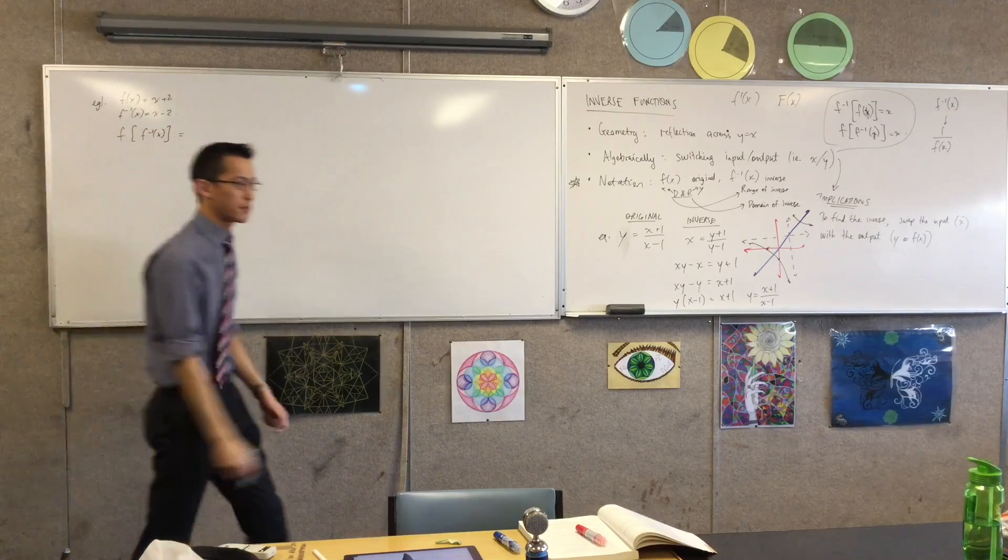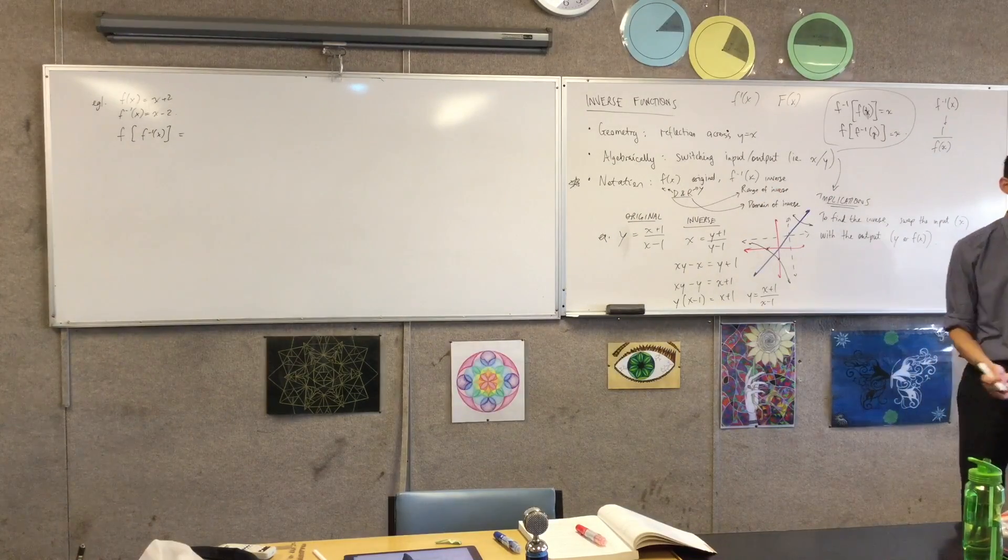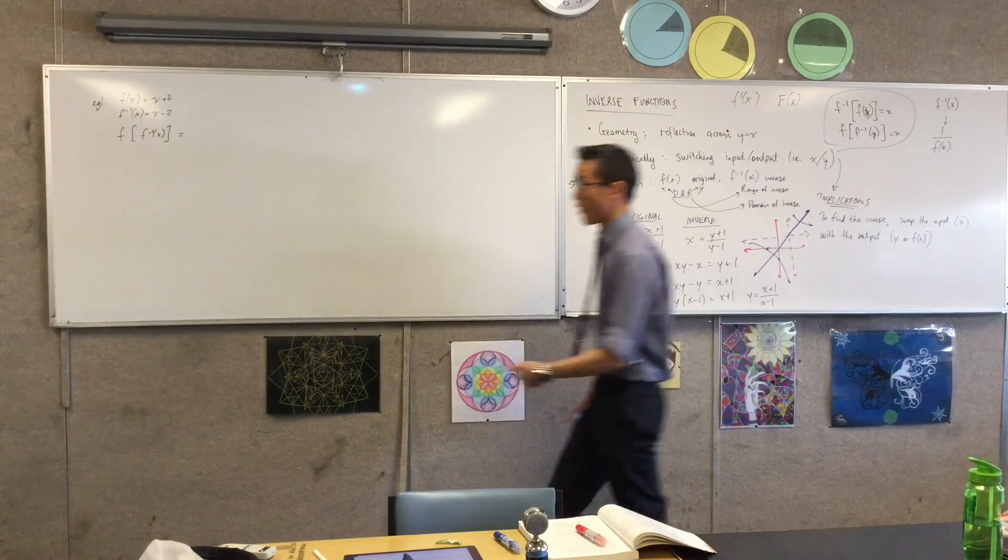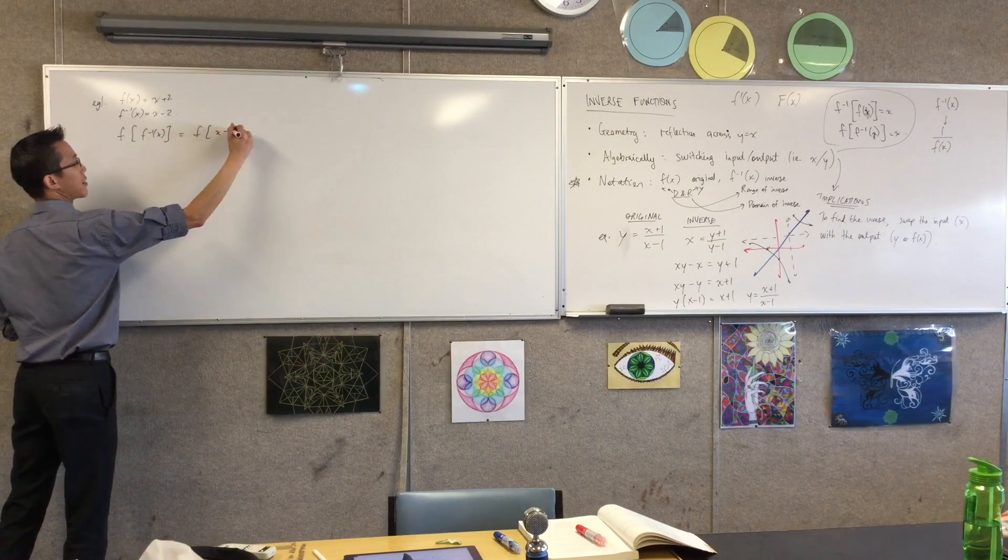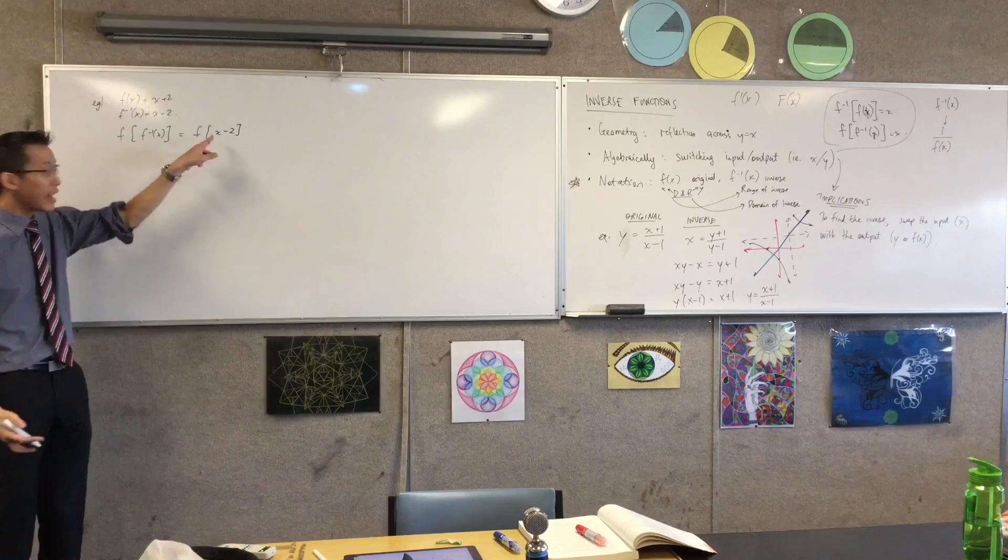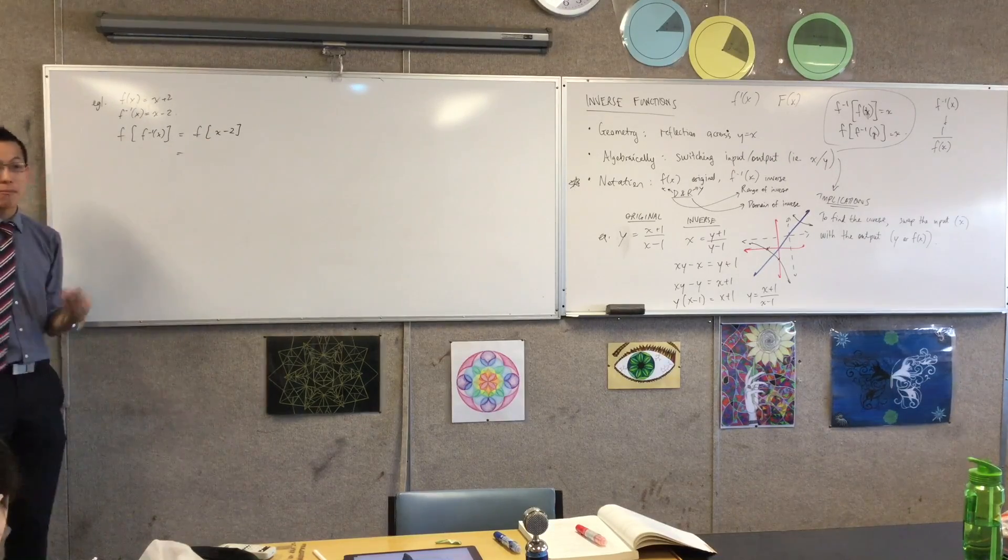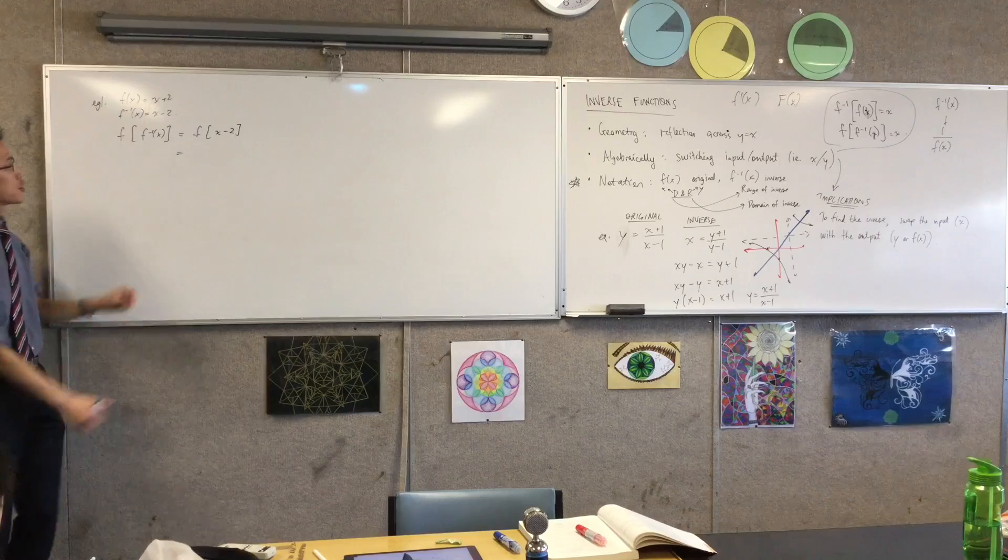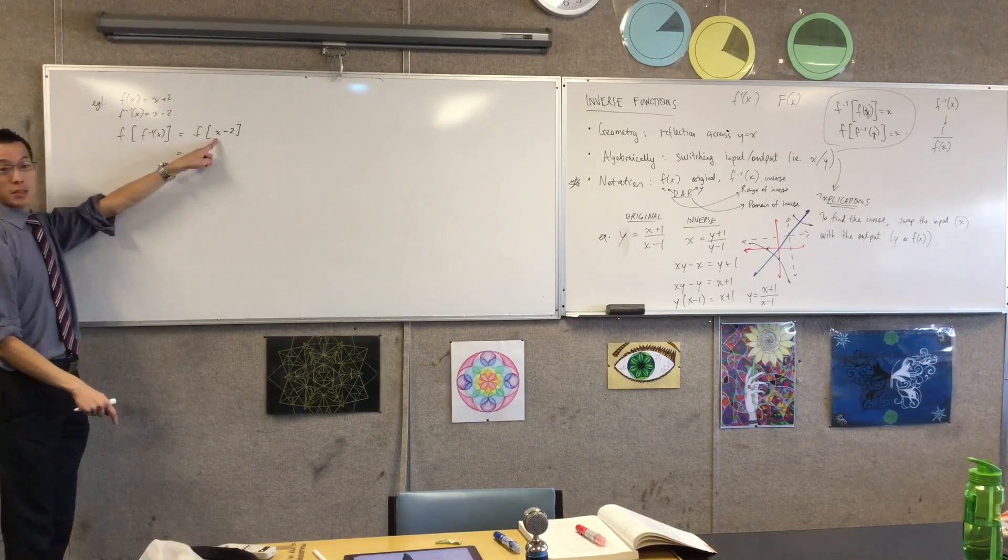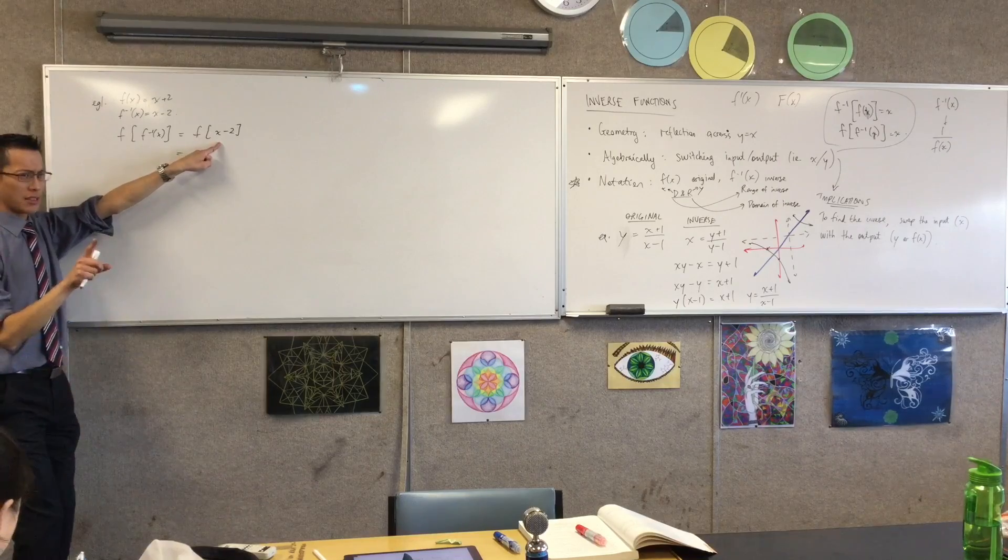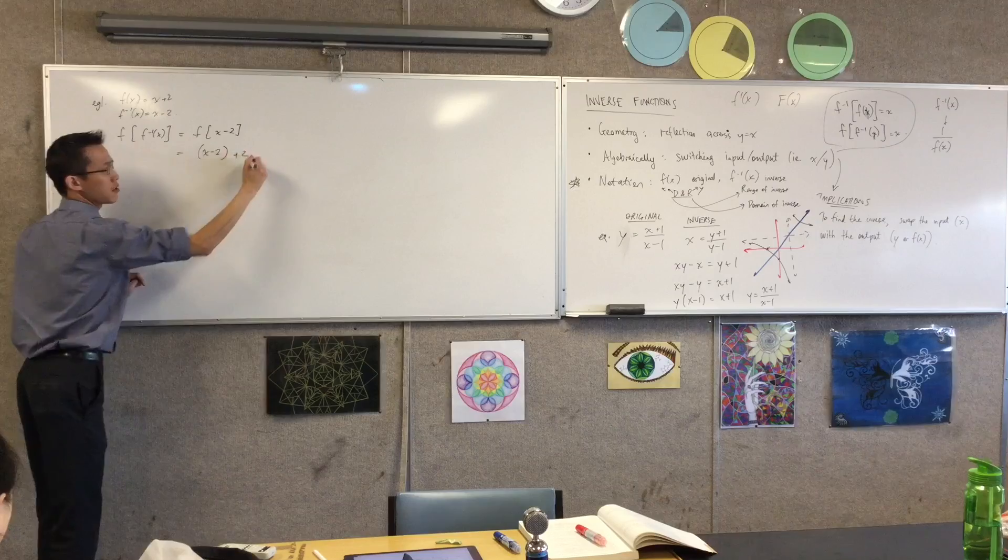I'm just going to do a straight substitution first, if that's okay. F inverse, I know exactly what that is. I defined it one line ago. So this is actually f of x minus two. Do you agree with that? Like, that's what f inverse is, just the definition. So now I apply the original function to it, which means everywhere I see x, I'm going to replace it with an x minus two. Does that make sense? That's what I'm inputting. So it's x minus two plus two.